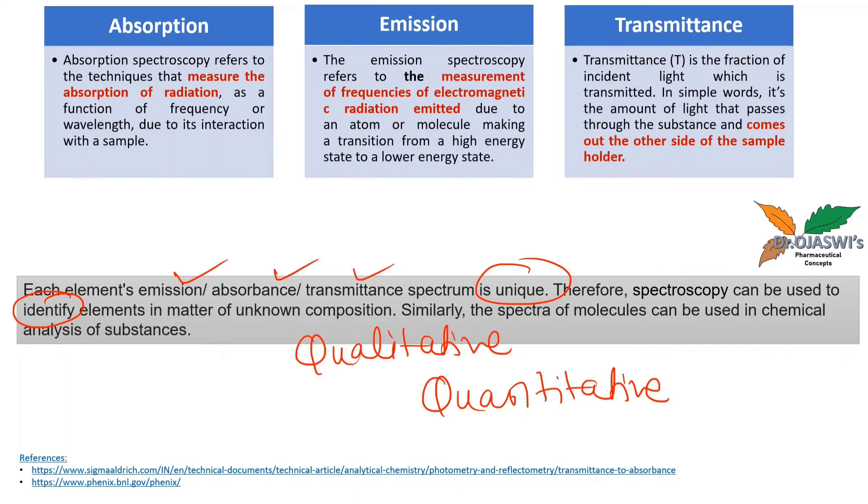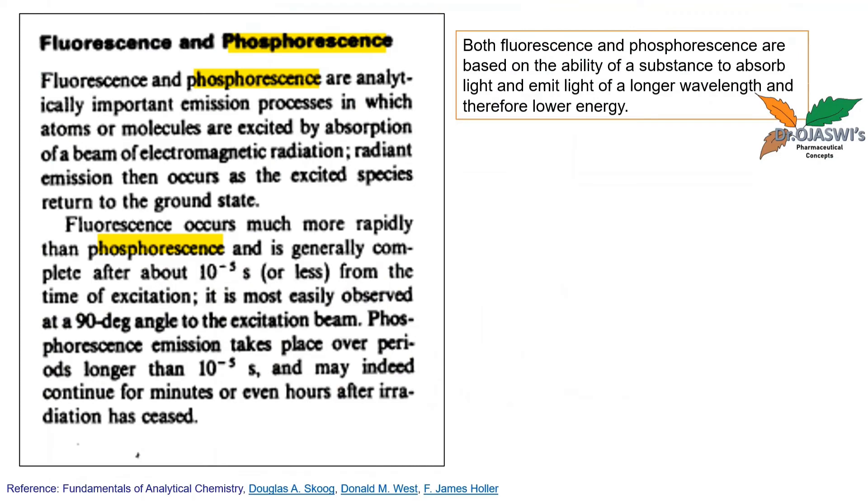So here specifically, now you must have understood that the answer is option B, that is emission spectroscopy. Fluorescence, luminescence, and phosphorescence, these are the types of emission spectroscopy.